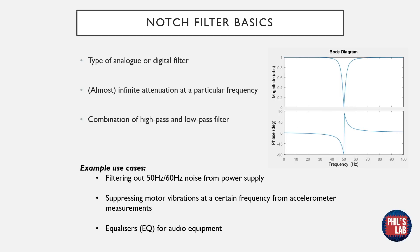Notch filters are incredibly useful in many different applications. For example, in filtering out mains frequency noise, which is typically 50 or 60 Hz from power supplies, suppressing motor vibrations at a certain frequency when we're performing measurements with an accelerometer, and they can be found in many audio equalizers in audio equipment.